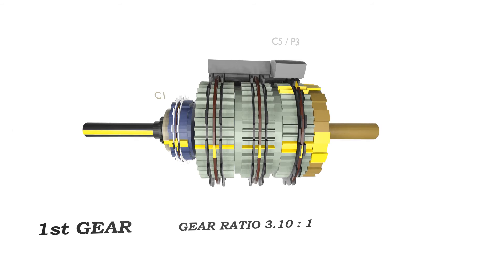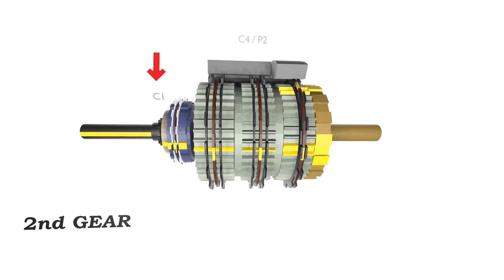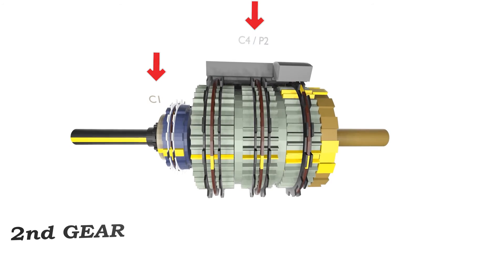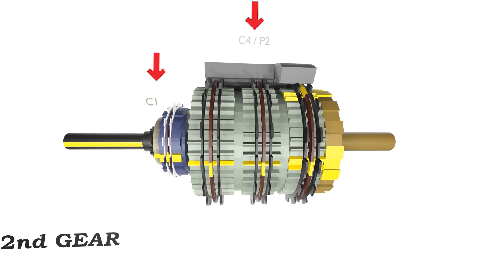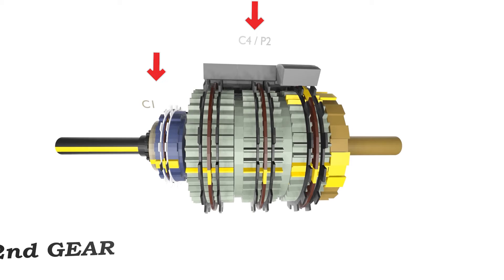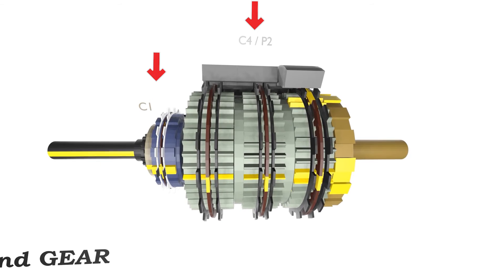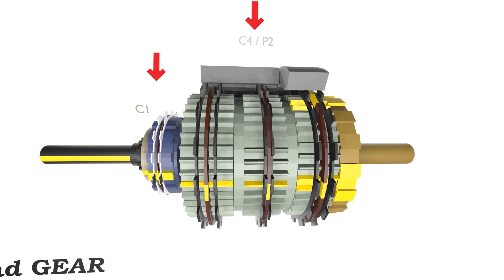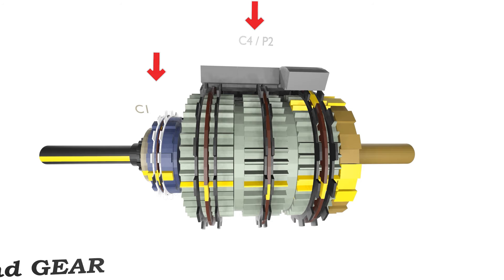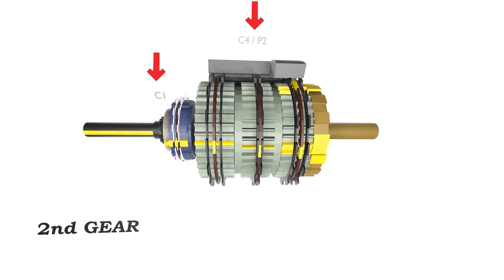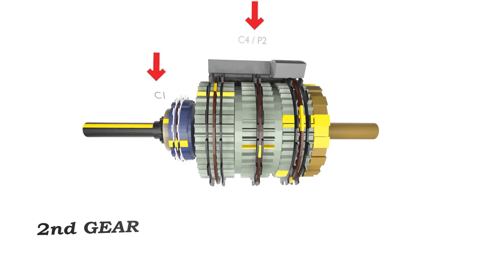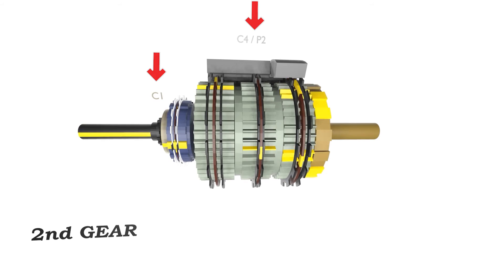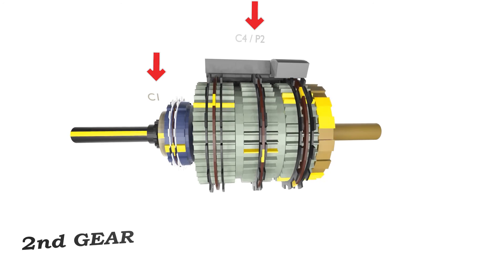To move to second gear, we see that C1 and C4 must be applied, which means the clutch packs from C5 must disengage and allow the ring gear from planetary 3 to rotate freely again. We must now apply the clutch packs to C4 to stop the ring gear of the planetary gear 2 system from rotating. Now that the clutches for C4 are engaged, planetary 2's ring gear is no longer rotating and is locked in place to the transmission housing.